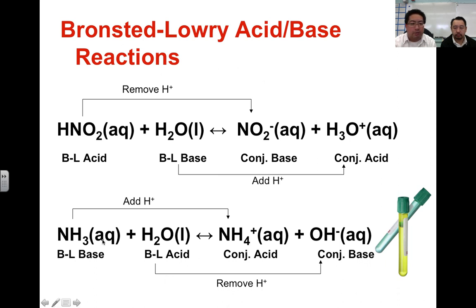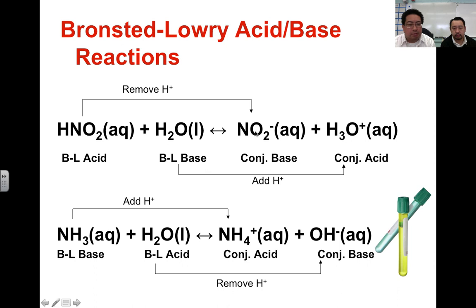We can show this more visually with chemical reactions. Here we have nitrous acid reacting with water. Notice how the difference between HNO2 and NO2⁻ is the loss of a proton, and the difference between H2O and hydronium is the addition of a hydrogen ion. So HNO2 is our Bronsted-Lowry acid, H2O is our Bronsted-Lowry base, NO2⁻ is the conjugate base, and hydronium is the conjugate acid — these are our two conjugate pairs.